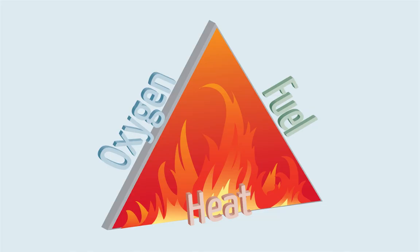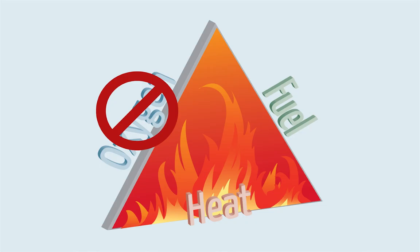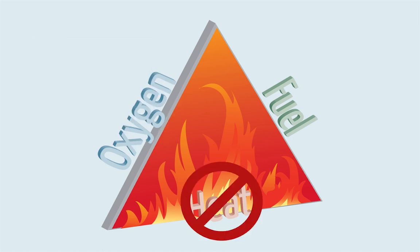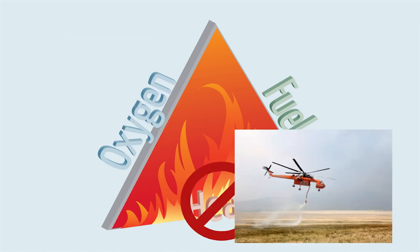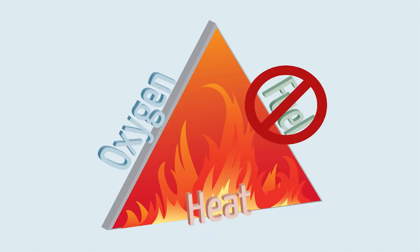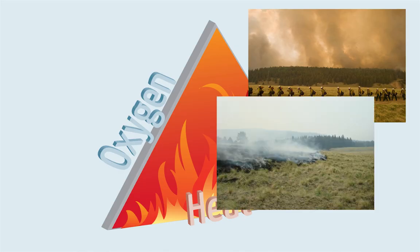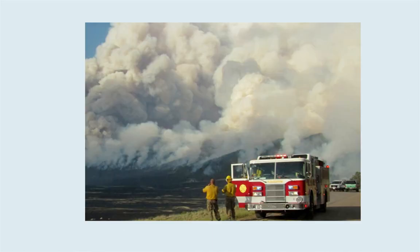Firefighters can use the fire triangle to help extinguish fires. They can remove oxygen by smothering the fire with flame retardant, such as slurry dropped from planes. They can remove heat by cooling the fire with water. And they can remove fuel by digging a fire line or starting a backfire to starve the fire of fuel.